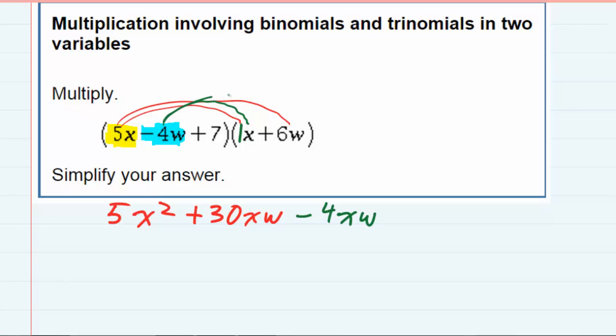And then I also need to multiply the second term. Negative 4 times 6w: -4 times 6 is -24, and w times w gives us w squared, so -24w squared.